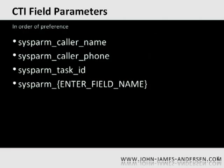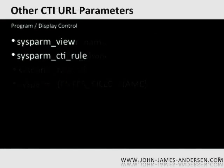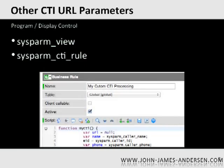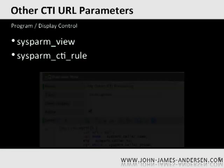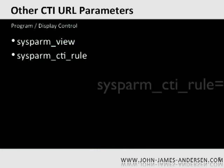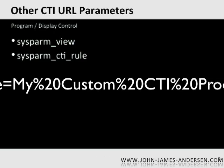Let's talk about some of the other URL parameters that play an important part within the CTI integration. The sysparm_view URL parameter allows you to specify a specific view of the user record that should be opened within ServiceNow when the integration triggers the browser. The sysparm_cti_rule URL parameter allows you to customize the actual processing of the CTI integration. If the current processing flow doesn't fit your business needs, you can create your own business rule and write the flow of your choice, then reference your custom rule by passing in this URL parameter.